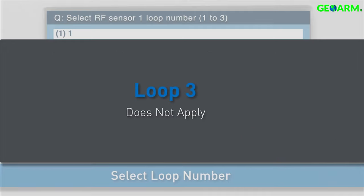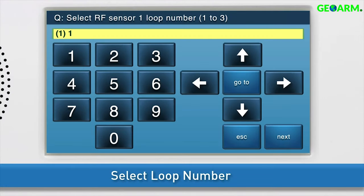Loop 3 does not apply to the thin door window contact and should not be selected. Once the desired option displays in the answer box, press the down arrow to go to the next sub-question.